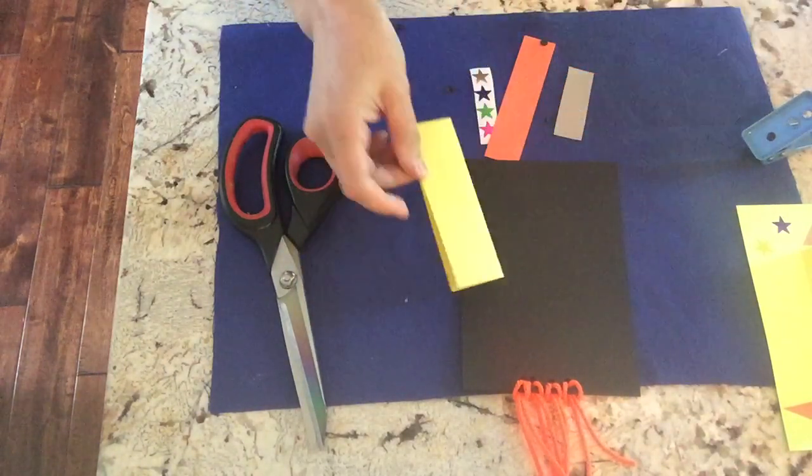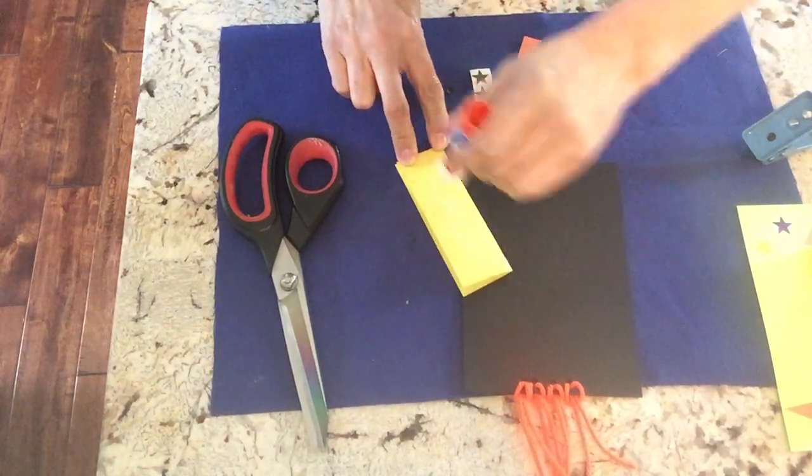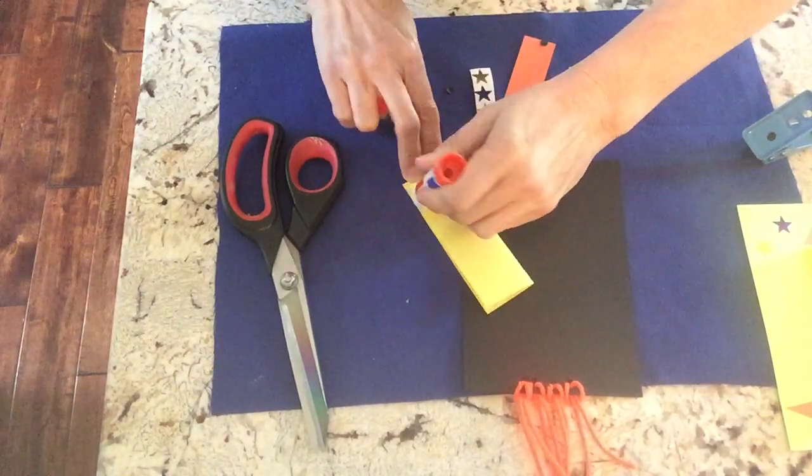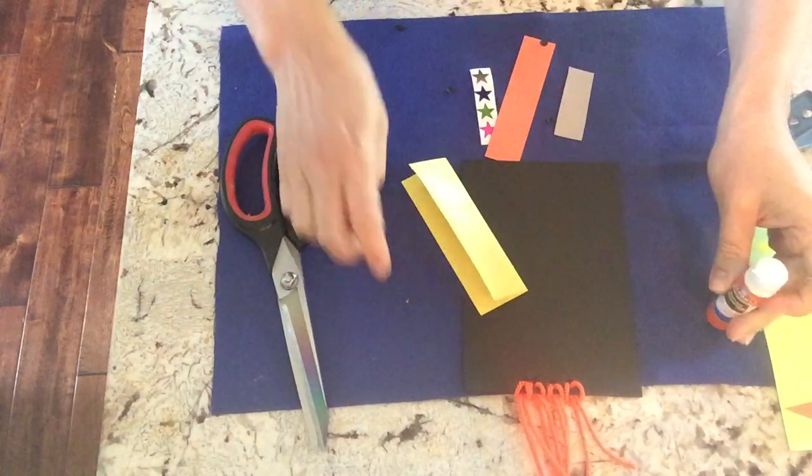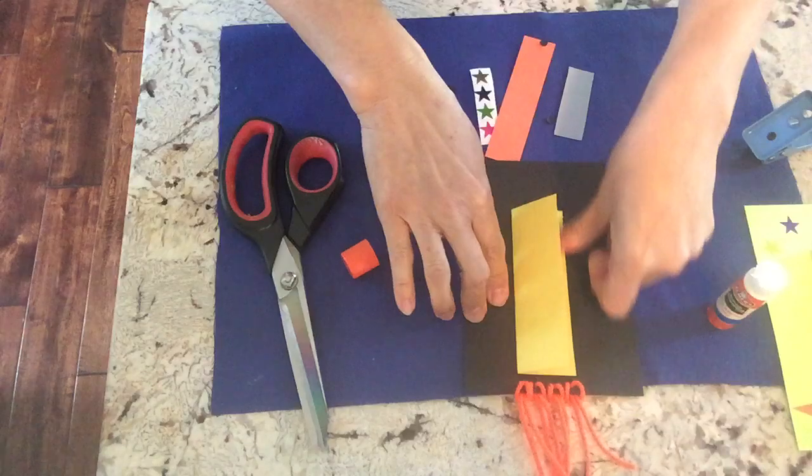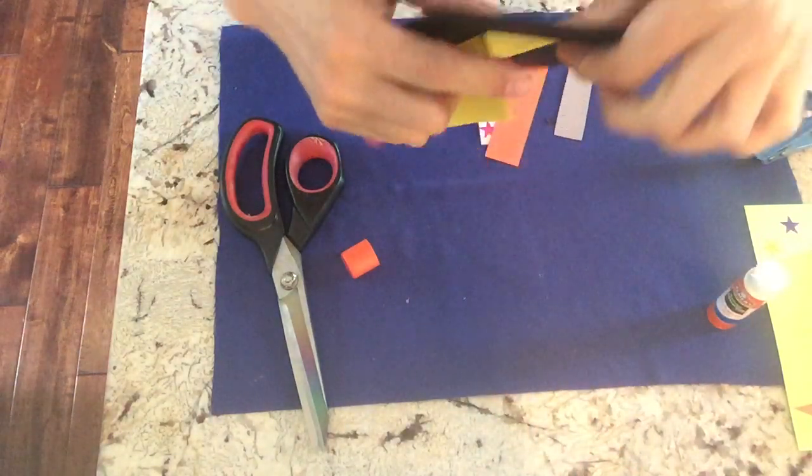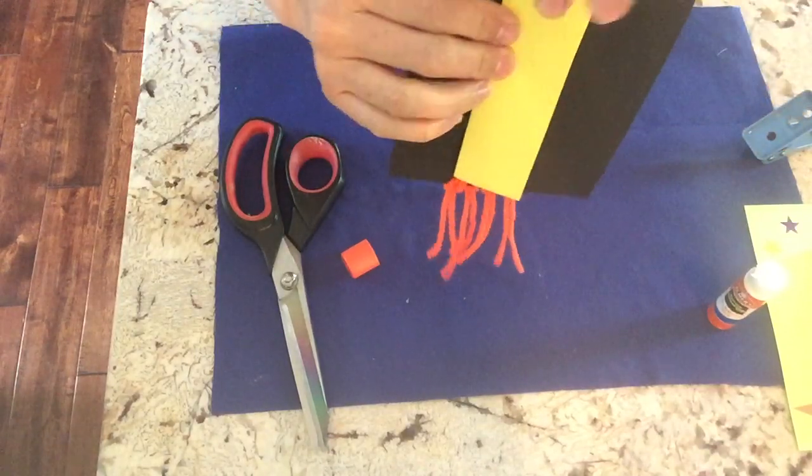So just on the back side, I'm gonna put glue on the back. I'm gonna put that right there. See how that opens up like a little card.